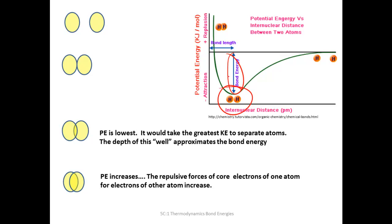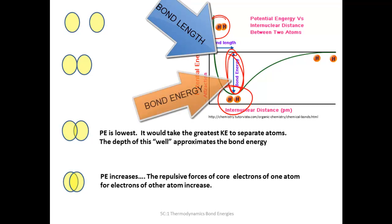And at some point right here, that is where the potential energy is the lowest. Or you could also think of it as this is where it's going to take the greatest amount of kinetic energy to pull these atoms apart. The depth of this well right here, the depth of that well is the bond energy approximately. That's how much kinetic energy it's going to take to pull these atoms apart. If we try to push them even closer together, there's going to be repulsive forces of the electrons of one atom and the electrons for the other. And so the potential energy increases.